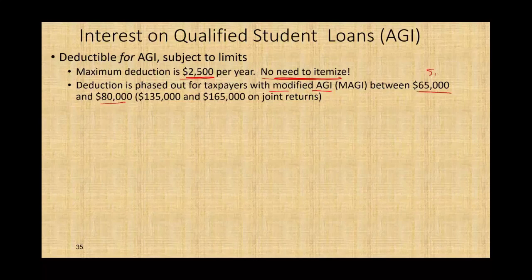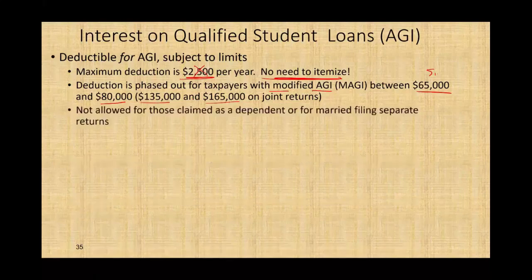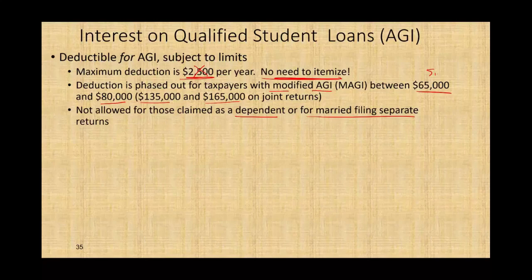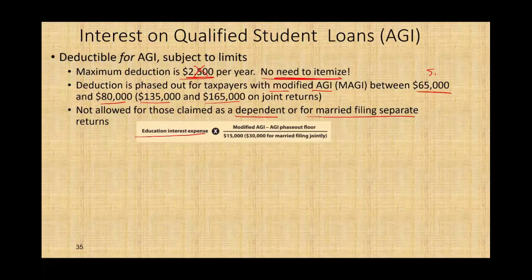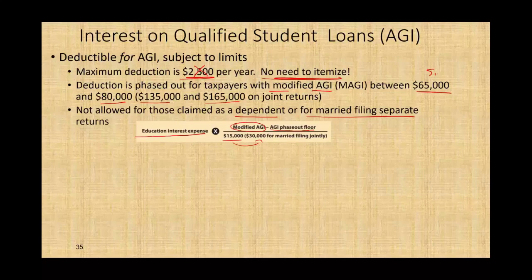If you're single, once your modified AGI goes from $65,000 to $80,000 — over $80,000, you're no longer qualified. If you're married filing jointly, the range is $135,000 to $165,000. This deduction is not allowed for those who are claimed as a dependent or married filing separately. To compute the exclusion amount, take the education interest expense multiplied by your modified AGI minus the phase-out floor, divided by either $15,000 if you are single or $30,000 if you are married filing jointly.